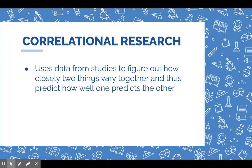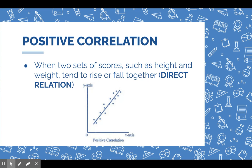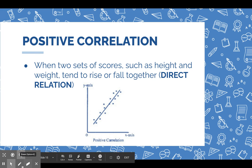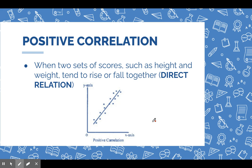In correlational research, we break correlation down into a few different components: positive or direct correlation, negative or inverse correlation, and also strong and weak correlation. With positive correlation, the two variables are going the same direction — they're both rising or both falling. For example, usually if you are taller, you tend to weigh a little bit more because you have more body mass, and if you're shorter, you tend to weigh a little bit less. They're going the same direction.